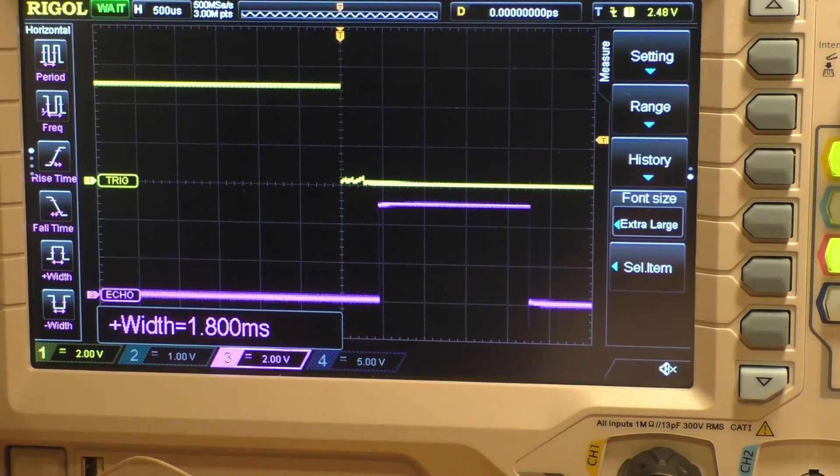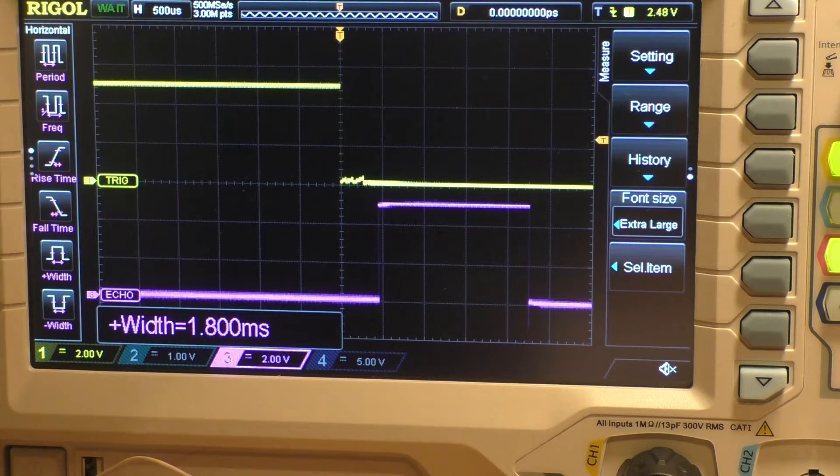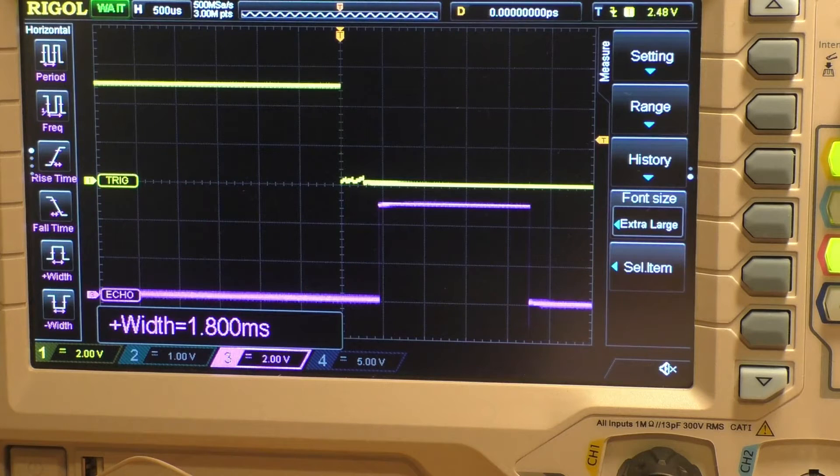Then the microcontroller would need to calculate the length in cm, and by analyzing the measurement data we've done before, you can work out that the formula is: length in cm equals the measured time in microseconds over 60. And that is gonna give you the answer.